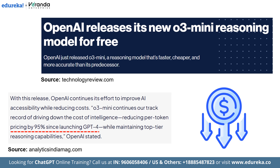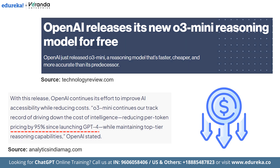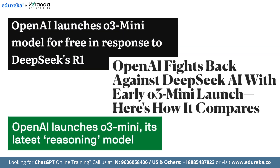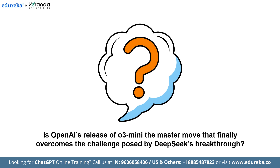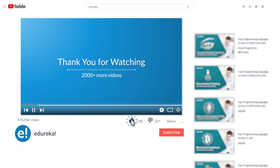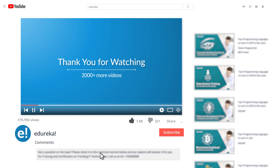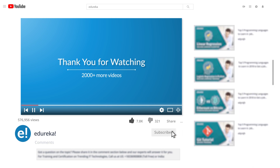With this, we have come to the end of this video on OpenAI O3 mini. We've seen how O3 mini delivers lightning-fast responses and robust STEM reasoning, directly countering the recent DeepSeek AI release — a move many are calling nothing short of a masterstroke. Is OpenAI's O3 mini the master move that finally overcomes DeepSeek's challenge? Will this decisive step secure OpenAI's lead, or is there more to come in the global AI race? Let us know in the comments. Like the video, share your doubts and queries, and subscribe to the Edureka YouTube channel to learn more. Thank you and happy learning.